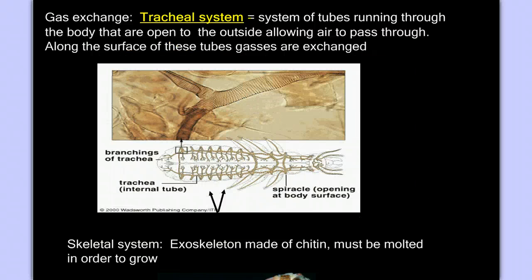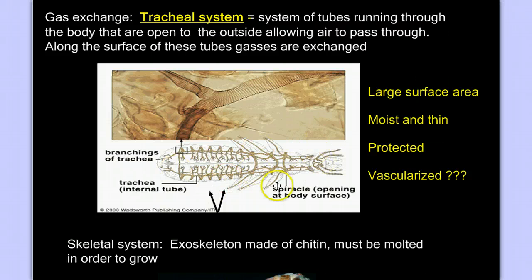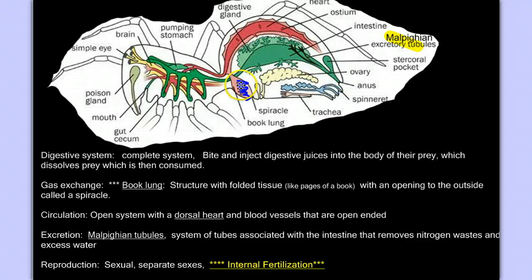The tracheal system shares all the qualities of a good gas exchange system. Large surface area — check, lots of branches. Moist and thin — this is microscopic, so we can assume thin, and since it's inside the body, more than likely moist. Protected — inside the body surrounded by an exoskeleton. And while we don't need it to be highly vascularized, the system is so branched throughout the body that it delivers gases itself. Compare that to the book lung of a spider, where gas exchange is centralized and blood vessels carry gases to other parts of the body — the tracheal system does the delivery itself.